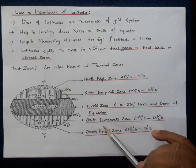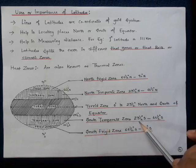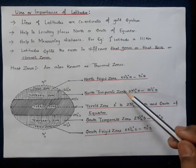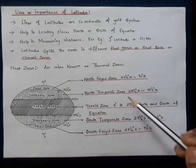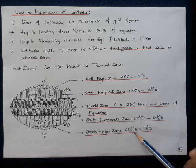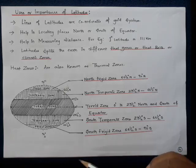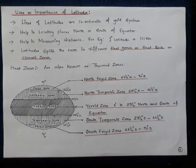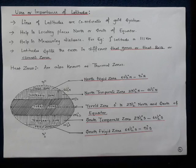Continuing south: the South Temperate Zone lies between 23.5°S and 66.5°S — it is the same as the North Temperate Zone. The South Frigid Zone extends from 66.5°S to 90°S, the same as the North Frigid Zone, where the rays of the sun are totally oblique and the rate of heating is very low. Hence polar regions are the cool regions of the world.